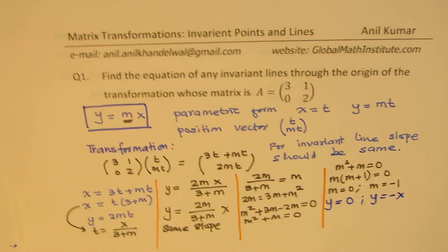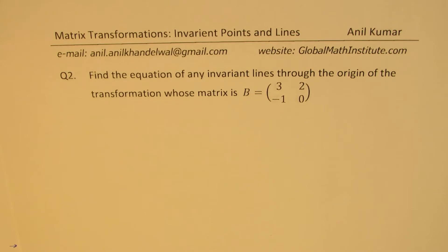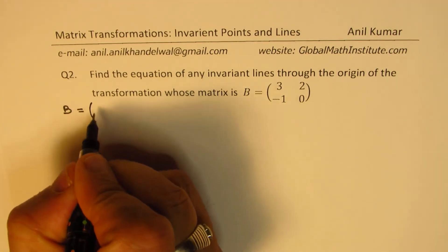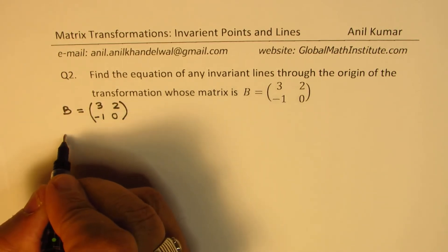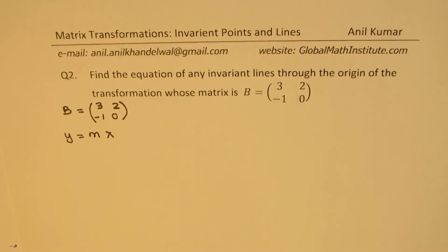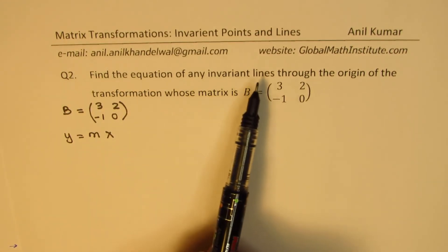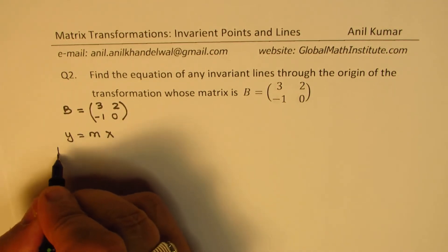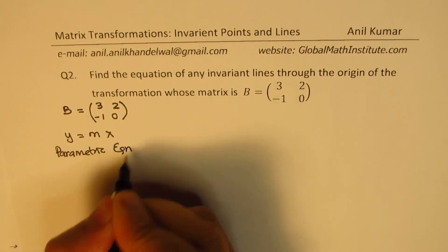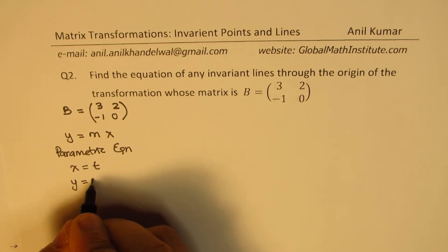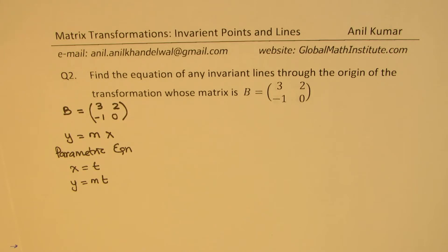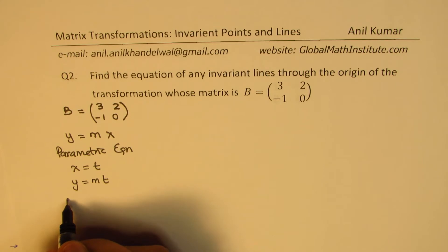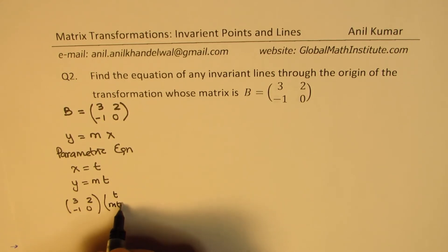Let's look into this process once again while solving question number 2. You can now pause the video, answer the question, and then look into my solution. We are given transformation B, which is 3, 2, minus 1, 0. We consider Y equals MX as our line through the origin. The parametric equation gives X equals T, Y equals MT. We apply the transformation, which is 3, 2, minus 1, 0, to the parametric vector T, MT.